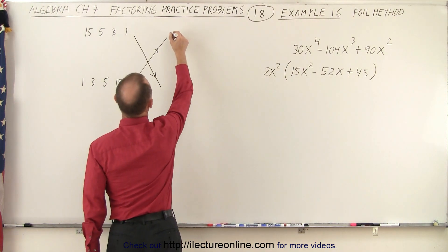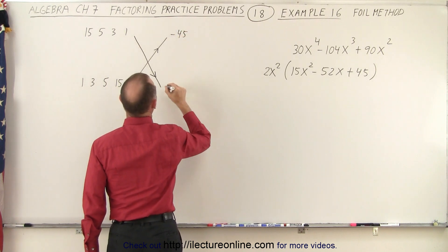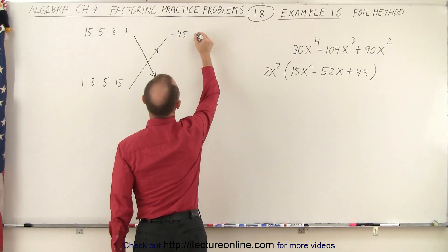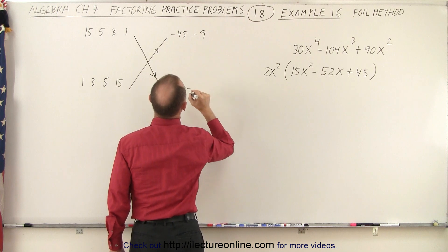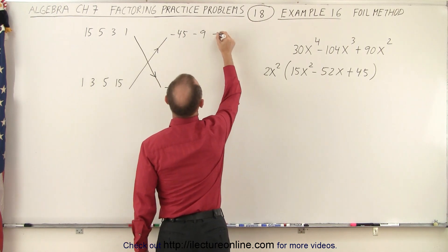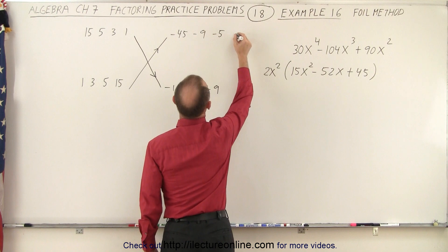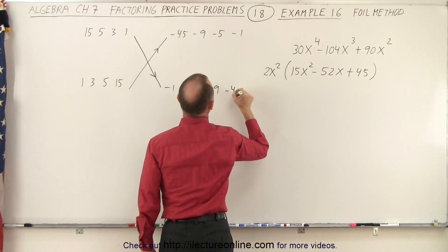So we can start off with negative 45 and negative 1. How about negative 9 and negative 5, or negative 5 and negative 9, or negative 1 and negative 45.